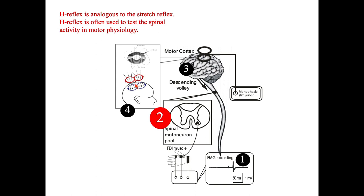With all these slides, we know the H-reflex is analogous to the stretch reflex in a physiological lab, and the H-reflex is often used to test the spinal activity in motor physiology. That means if we use TMS to stimulate the brain and get a response in the muscle, if we ask the subject to do two different tasks and find a different response, we must consider the spinal cord activity, as the spinal cord is on the pathway from the motor cortex to the muscle we want to record.